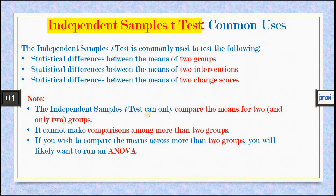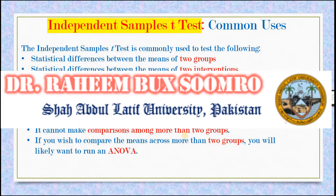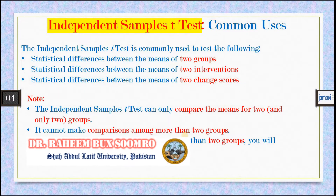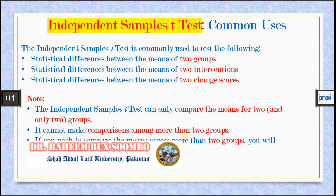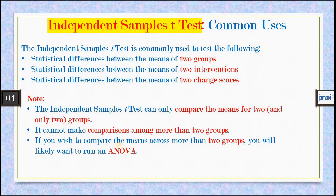Note that the independent sample t-test can only compare the means of exactly two groups. Whenever there are more than two groups — such as three or four — other tests are required, because the test cannot make comparisons among more than two groups. In JAMOVI, only two columns are provided: one for the test variable and one for the grouping variable. If you wish to compare means across more than two groups, you should apply ANOVA.